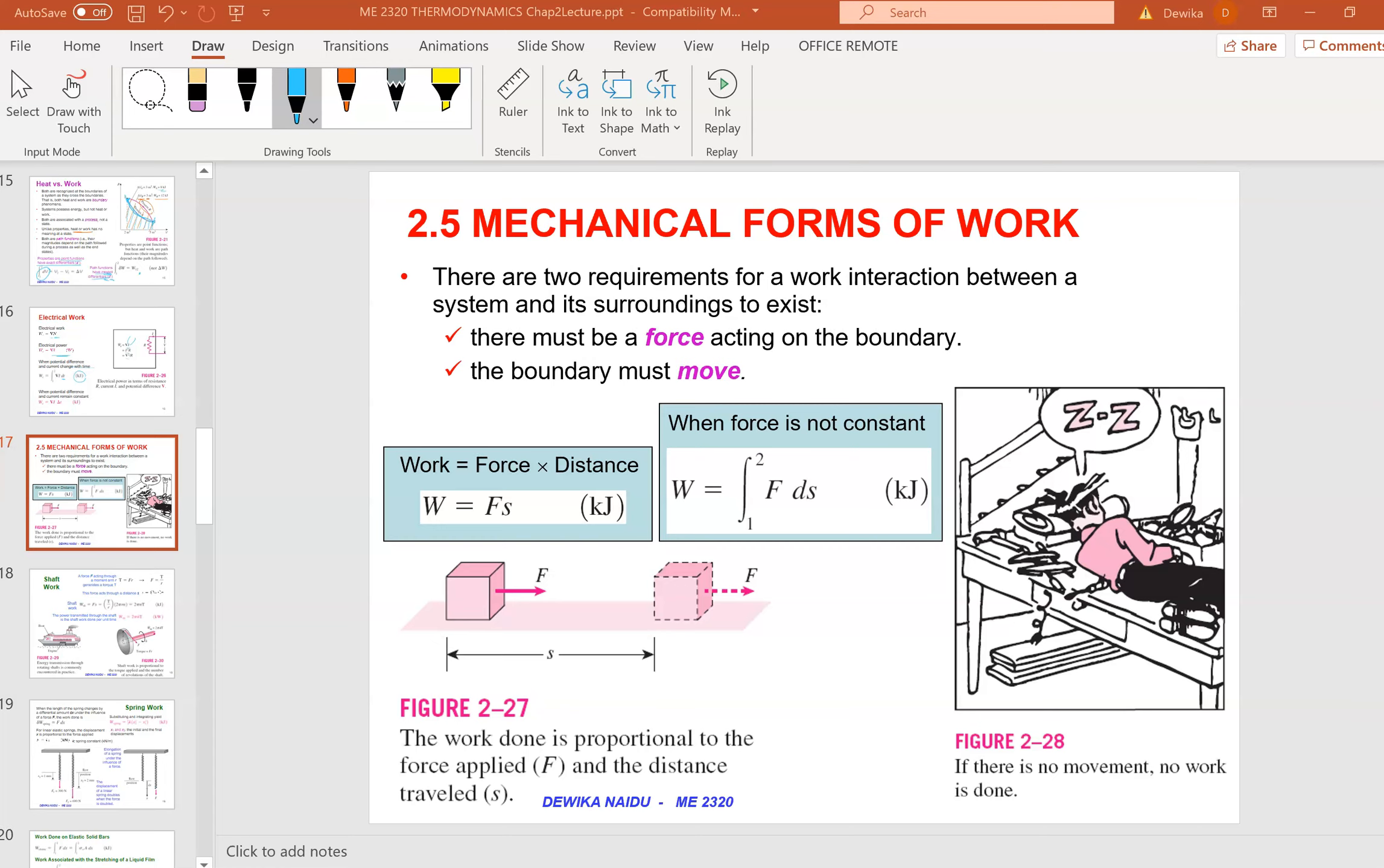Now I'm going to move on to textbook chapter 2.5, which is mechanical forms of work. We have a few works here: shaft work, spring work, work done by elastic solid bar, work associated with stretching of liquid film, and work done to raise or accelerate a body.